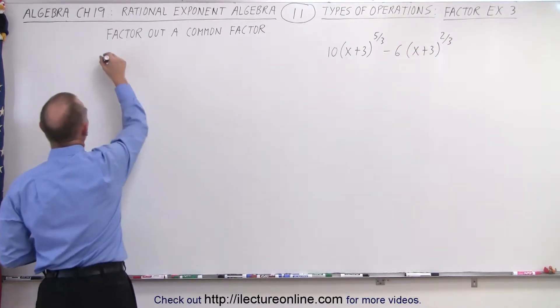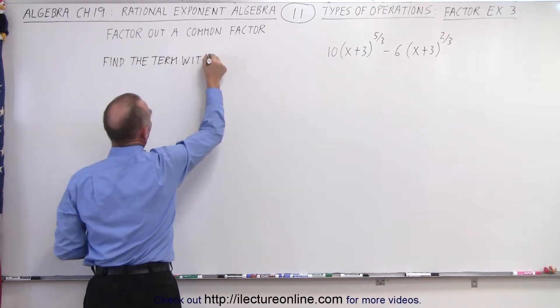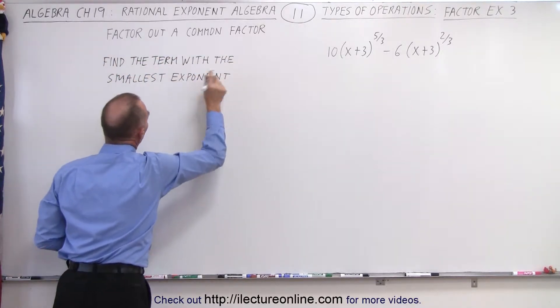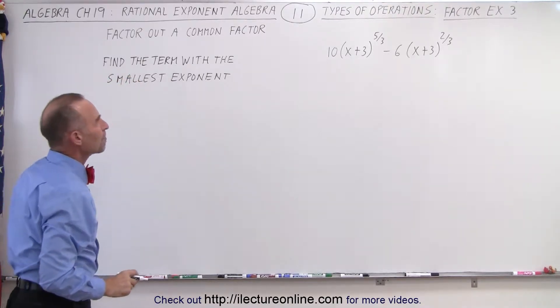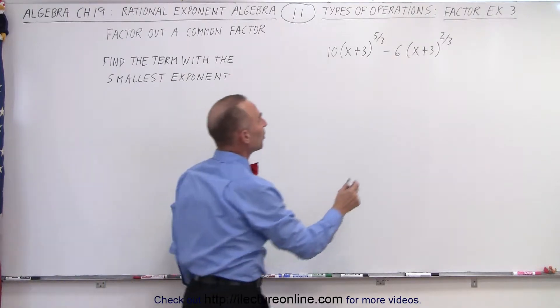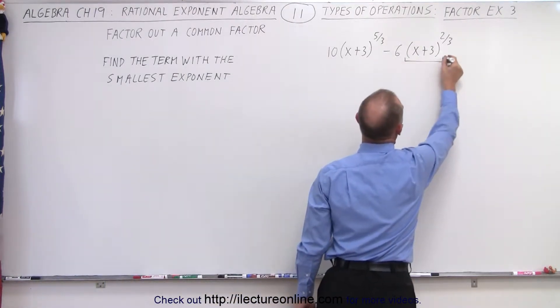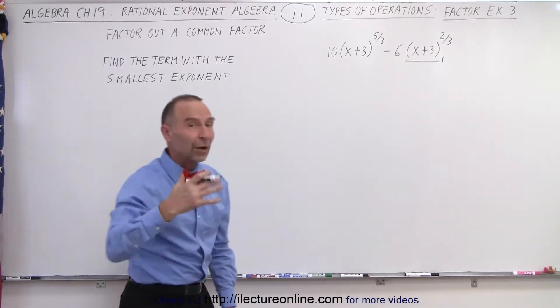So find the term with the smallest exponent. The smallest exponent is this term right there, and so we're going to factor that one out.